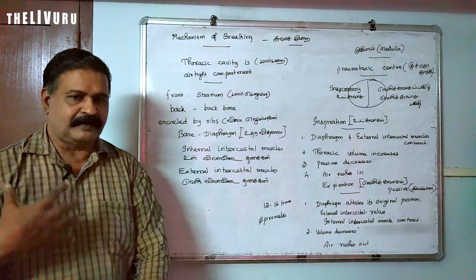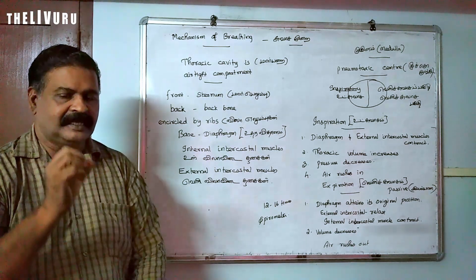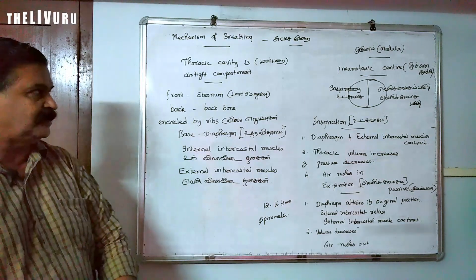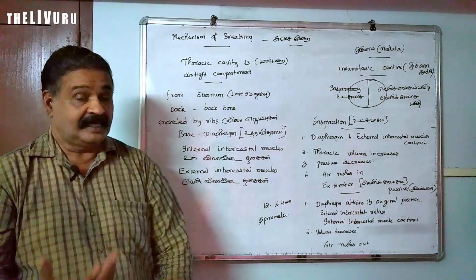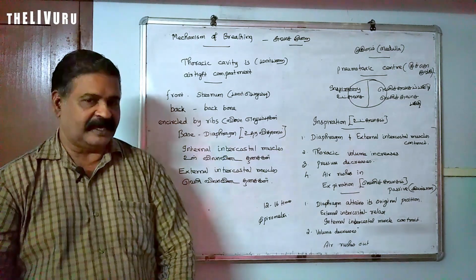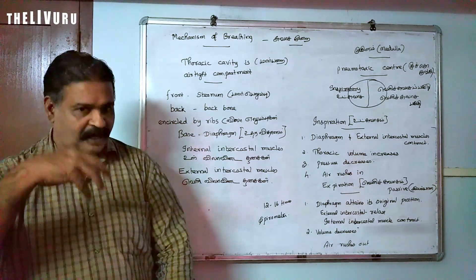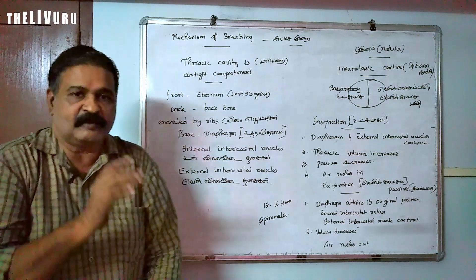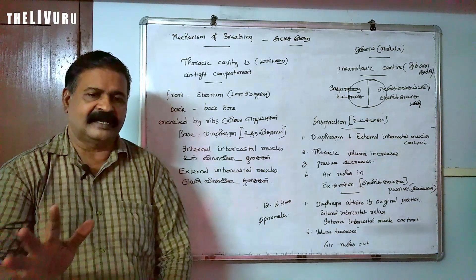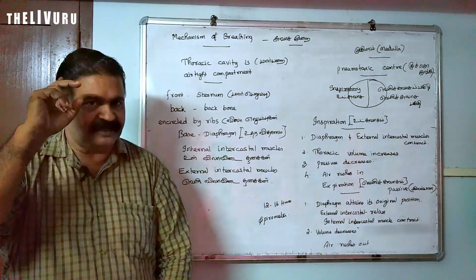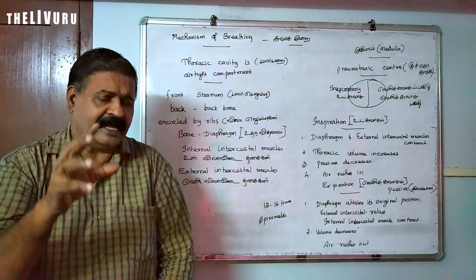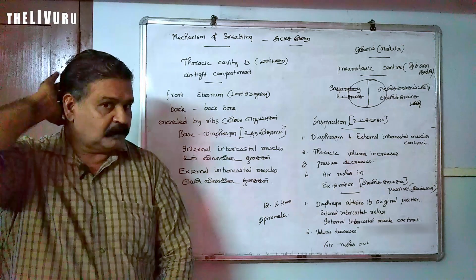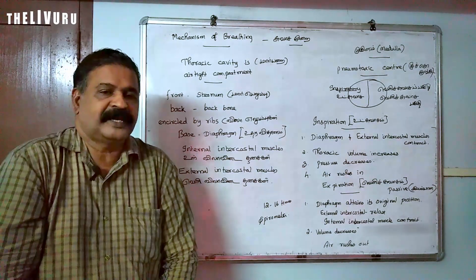In this thoracic compartment, we will see what is happening. This is an airtight compartment. We regulate breathing through the brain - the medulla oblongata. In the medulla, we have a respiratory center that controls the breathing process.